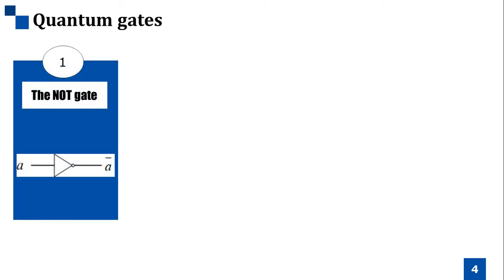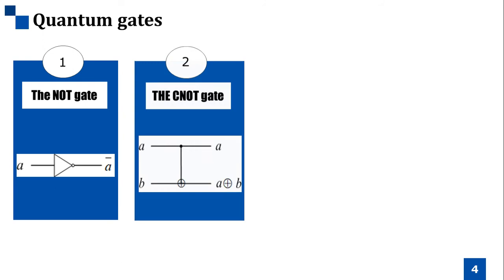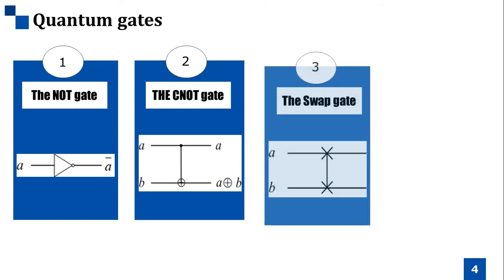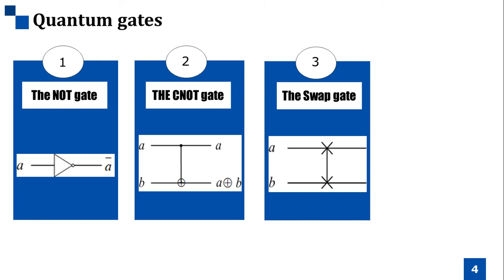The first is the NOT gate. The NOT gate has one input and one output. If the input is zero, then the output is one and vice versa. The second is the CNOT gate. The CNOT gate is the reversible equivalent of an XOR gate. The third is the SWAP operation. The SWAP gate will swap the two qubits A and B. We set the cost of the SWAP gate as free in this paper.